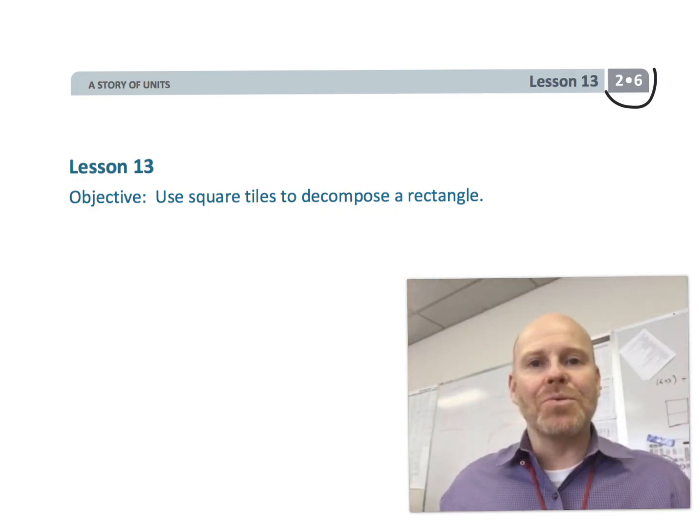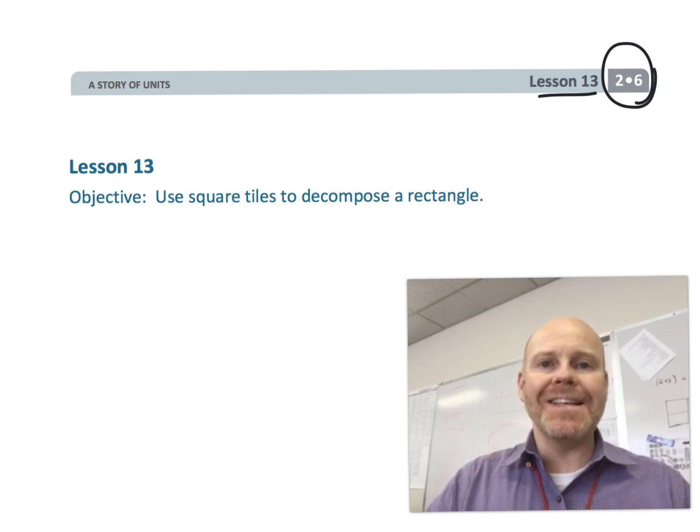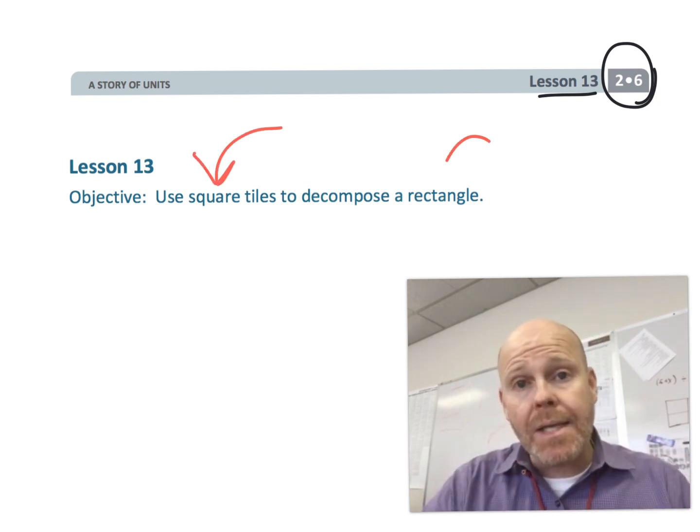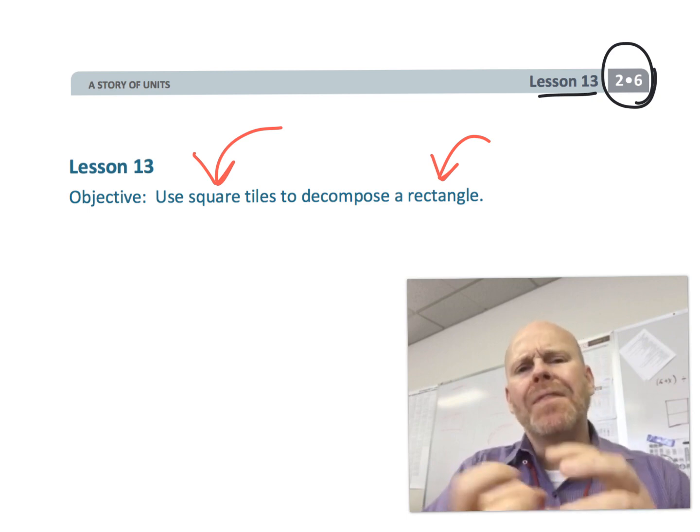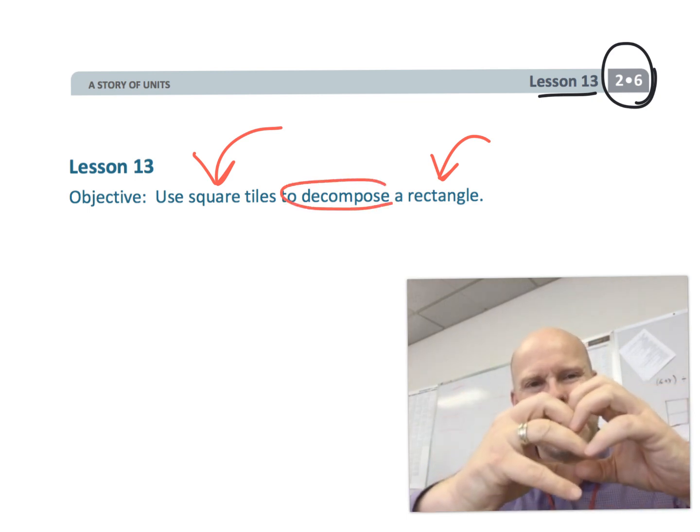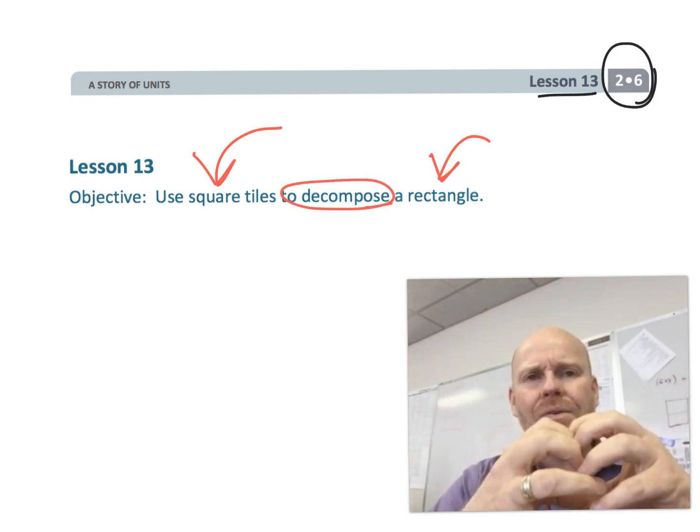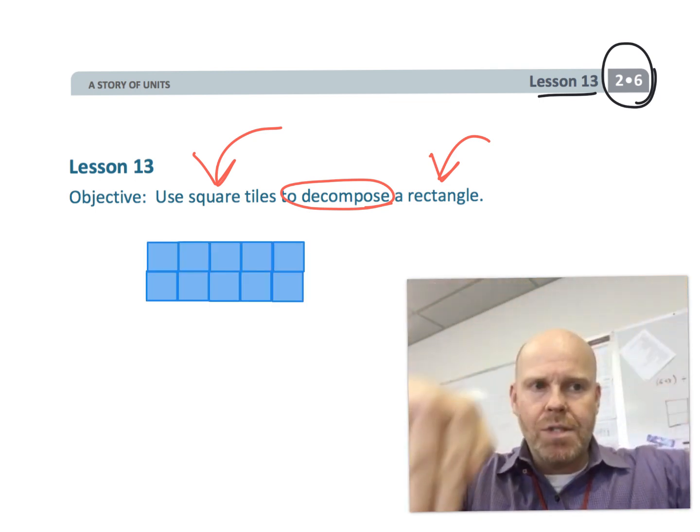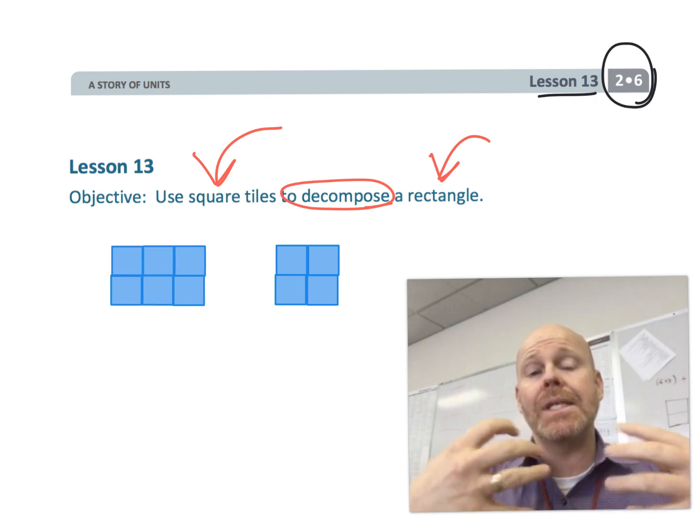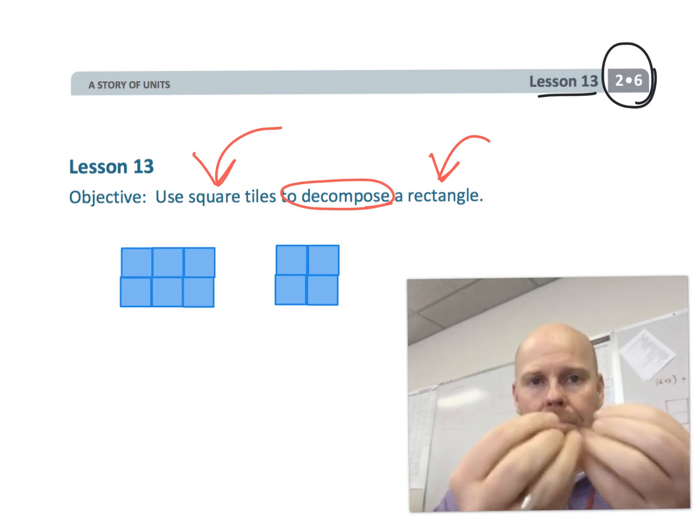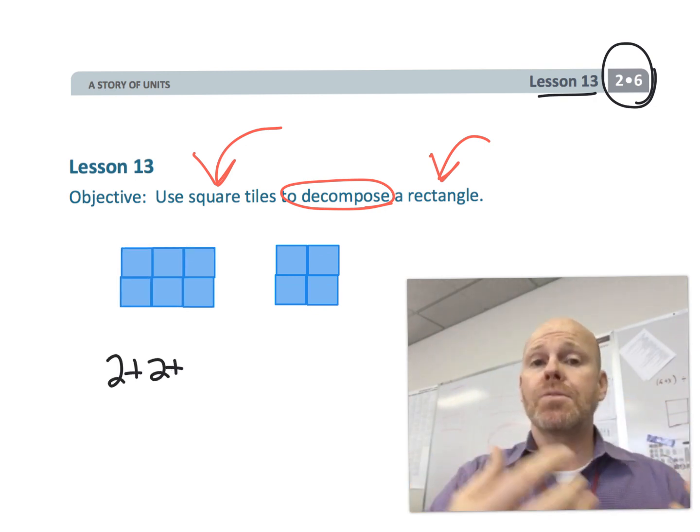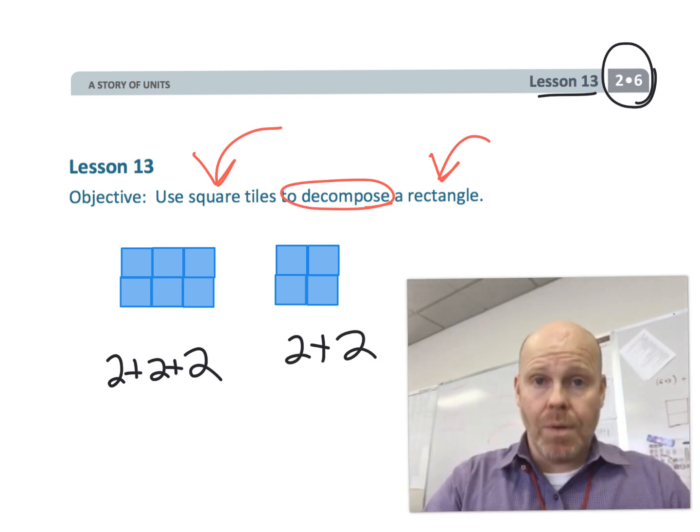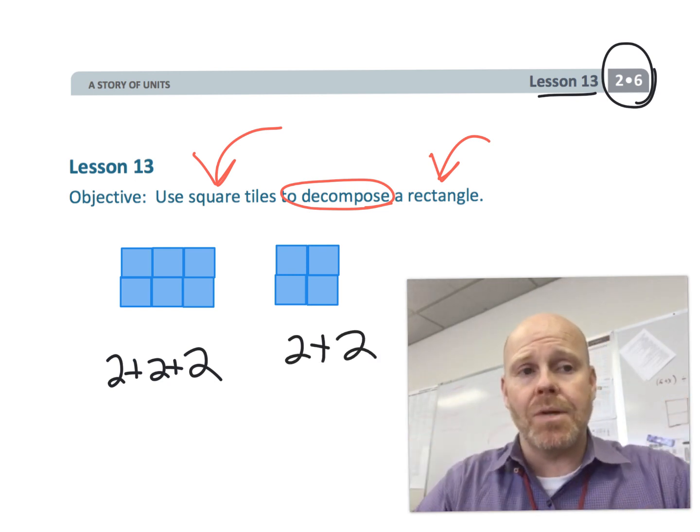All right, this is second grade module 6 lesson 13. In this lesson students are going to be using square tiles, they're going to be building rectangles or arrays, but then they're going to take that array and break it apart. That's going to create the opportunity for students to begin the understanding of decomposition, taking that array and breaking it up into two smaller arrays, and each of those arrays has a repeated addition. So let's get started.